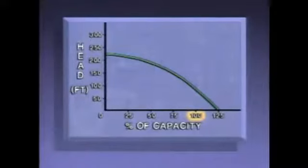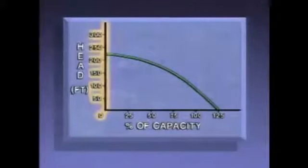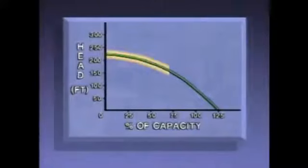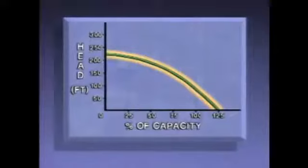This is the pump's optimum operating capacity. However, many pumps can be operated at capacities greater than optimum. The vertical axis of this graph shows head in feet. The curve shows that the amount of pressure this pump produces decreases as flow increases. Since this curve represents what is expected of the pump, it can be compared with actual values for total head and flow to see if the pump is performing the way it should.